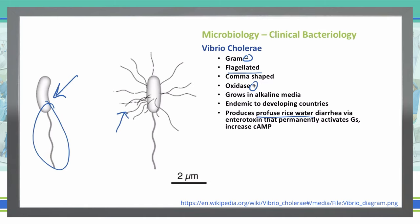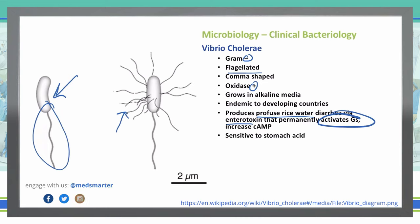This rice water diarrhea is due to an enterotoxin that will permanently activate our GS pathway, which will cause an increase in cyclic AMP, and it does this by binding to adenyl cyclase, which then will lead to an efflux of water and sodium into our intestinal tract, causing that rice water stool. Cholera is sensitive to stomach acid, so stomach acid can decrease its infectivity.